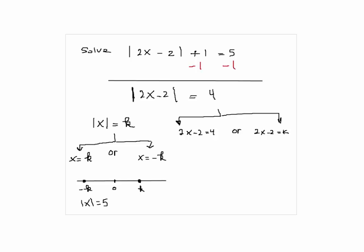So if I say absolute value of X is equal to 5, the answer would be X equals 5 or X equals negative 5, because these are the two numbers that are exactly 5 units away from 0.